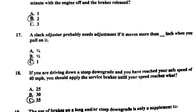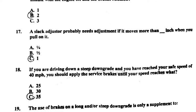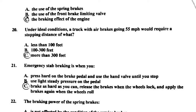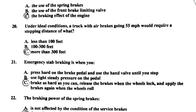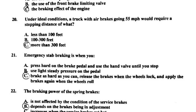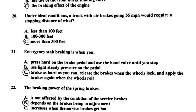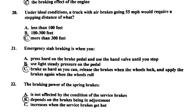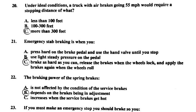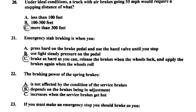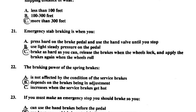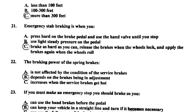Number nineteen: the use of brakes on a long and/or steep downgrade is only a supplement to — C, the braking effects of the engine. Number twenty: under ideal conditions, a truck with air brakes going 55 miles per hour would require a stopping distance of — C, more than 300 feet.